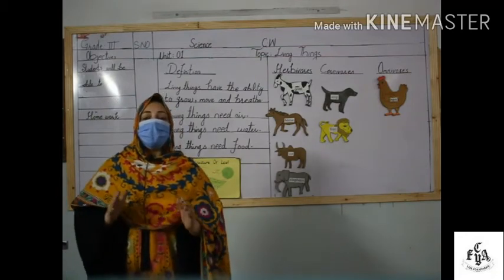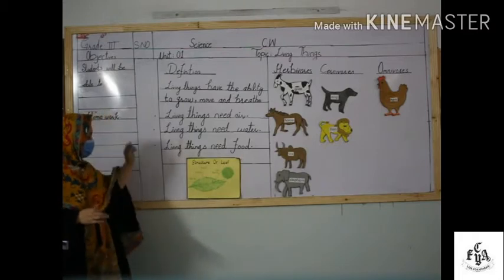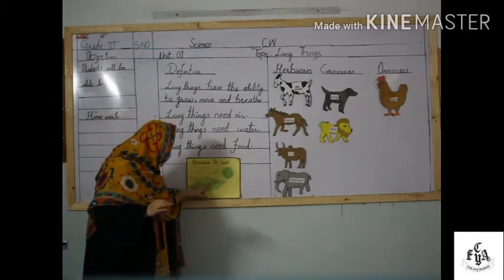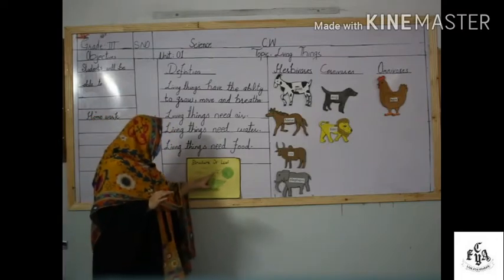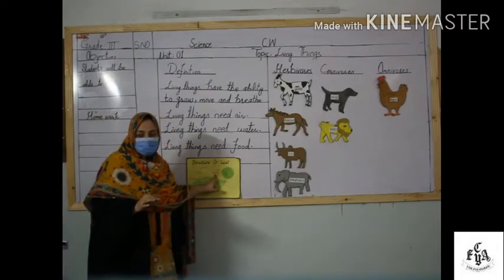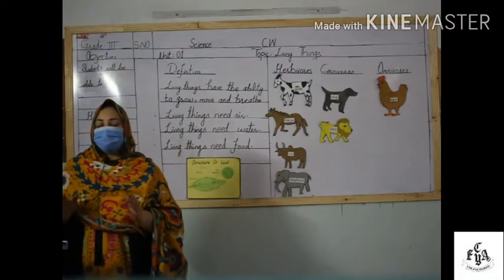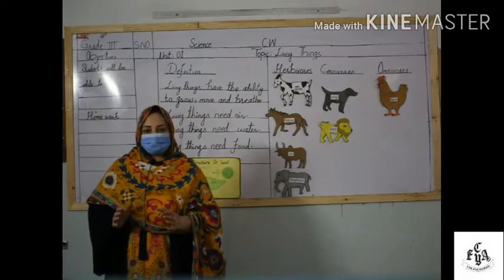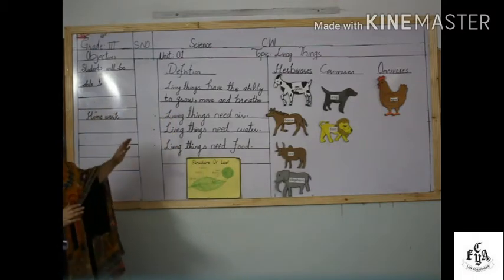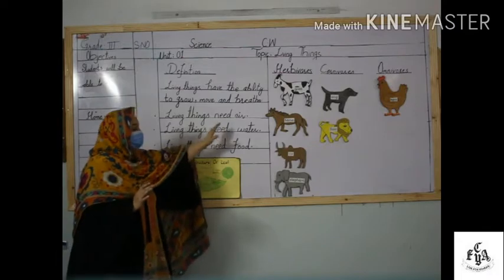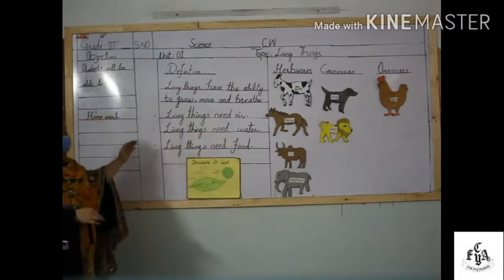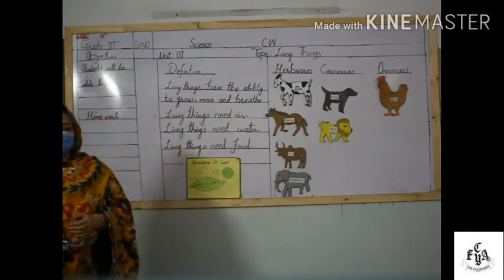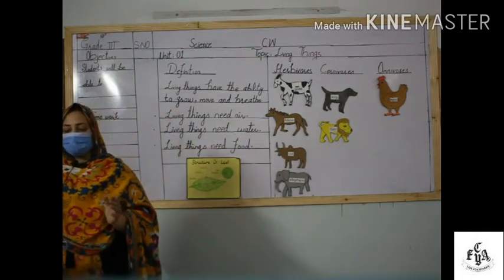Plants also breathe, and they take in air through the tiny holes in their leaves. These tiny holes are called stomata. Insects breathe through small holes on the sides of their bodies. This was all about living things needing air.